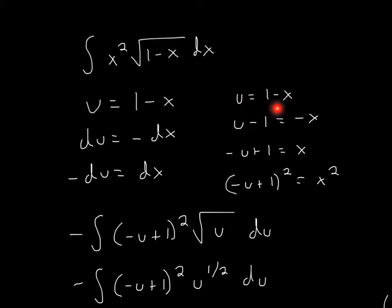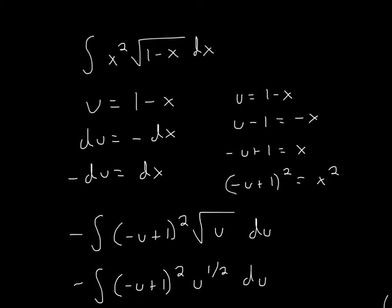We take u equals 1 minus x and subtract 1 from each side, giving us u minus 1 equals negative x. Multiplying both sides by negative 1, we get negative u plus 1 equals x. Now to get x squared, we square both sides, giving us x squared equals (negative u plus 1) squared.